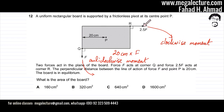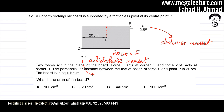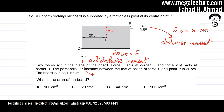Now for the other force, the perpendicular distance from the pivot would be this value over here, which I don't know. So let's call that X. The force 2.5F is acting in this particular direction — this is the line of action — and the perpendicular distance is X. So my clockwise moment would be 2.5F multiplied by the perpendicular distance X, giving 2.5F × X centimeters.